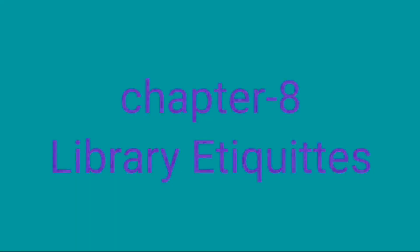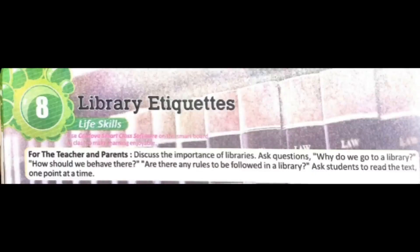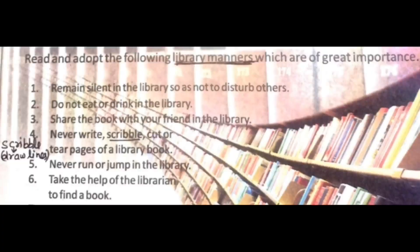Now the next chapter is Library Etiquettes. Etiquettes means manners. In this chapter we will learn about library manners - when we go to the library, how we need to behave. The first point is: remain silent in the library so as not to disturb others. Library mein humein chupchap rehna chahiye jisse doosre disturb na hon. Second point: don't eat or drink in the library.